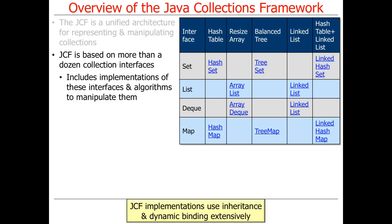The Java collections framework uses inheritance and dynamic binding very heavily. This is one of the main differences between Java and C++. C++ and its standard template library absolutely does not use inheritance and dynamic binding in any meaningful way — everything is statically bound, optimized at compile and link time. Conversely, with Java, everything is dynamically bound, and there are all kinds of interesting tradeoffs and pros and cons, but the features are more or less the same.